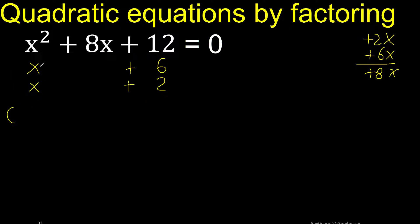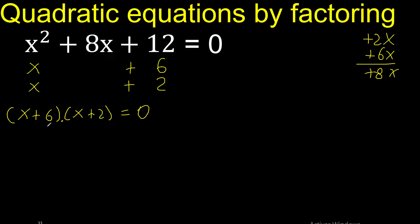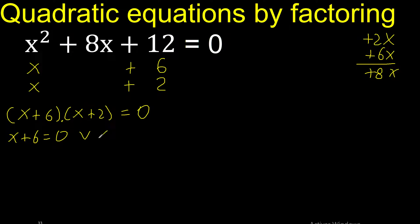Like this, equal 0. By multiplication, therefore this factor equals 0, or this factor equals 0.